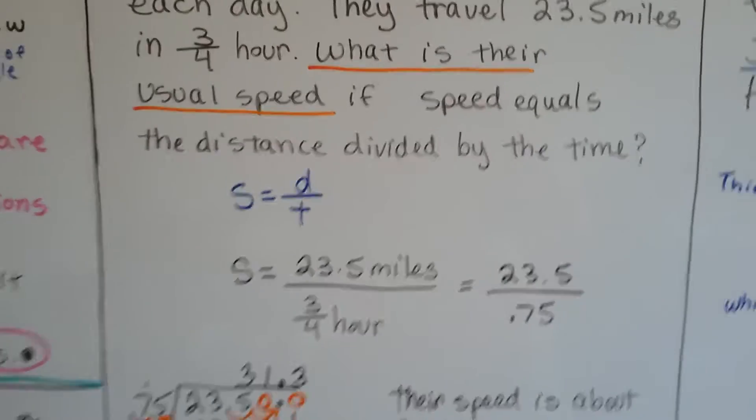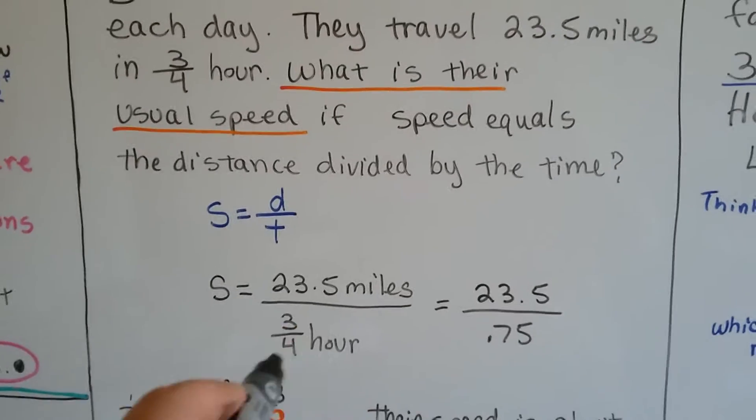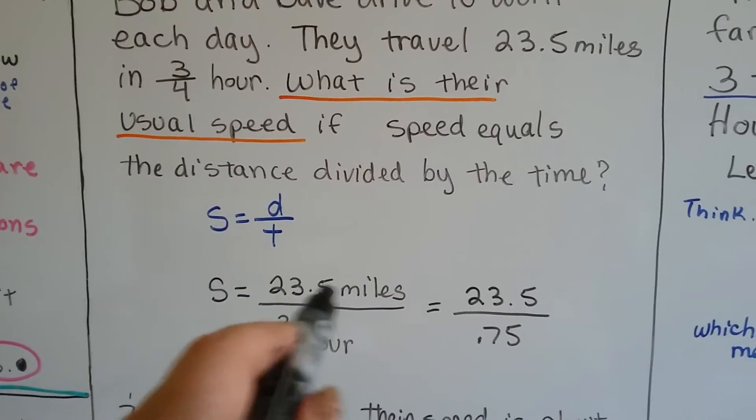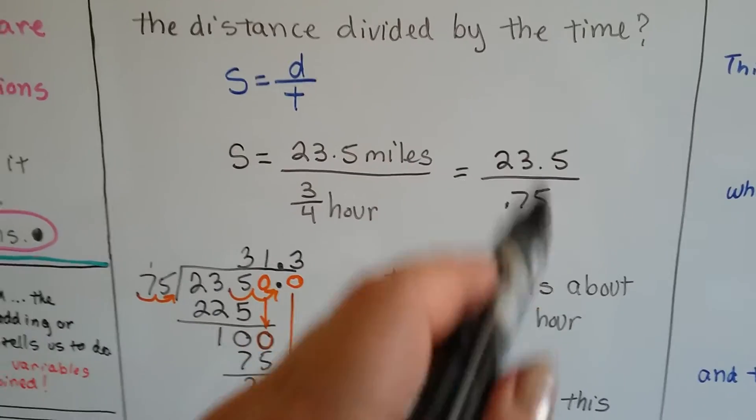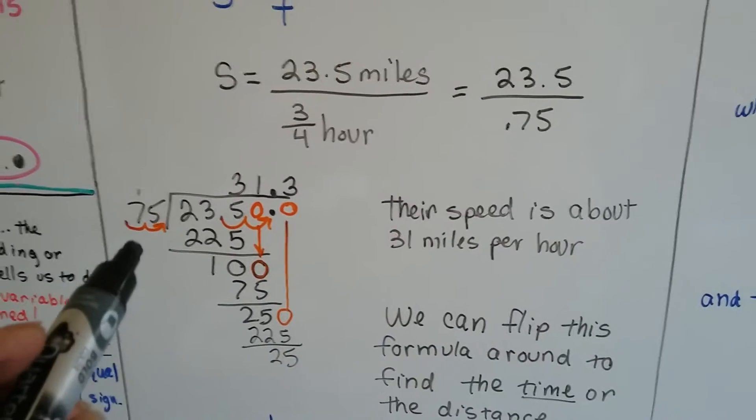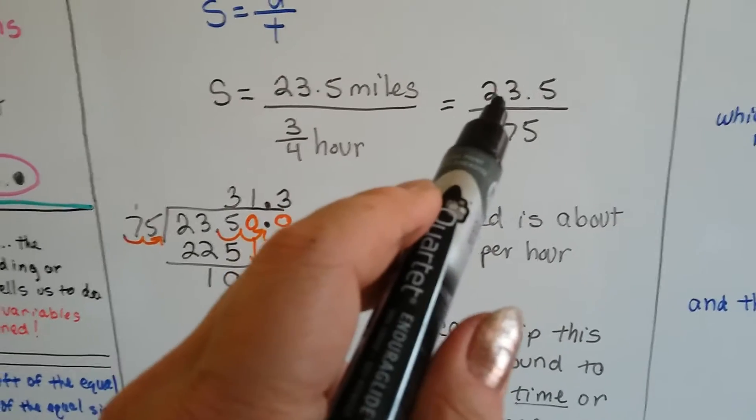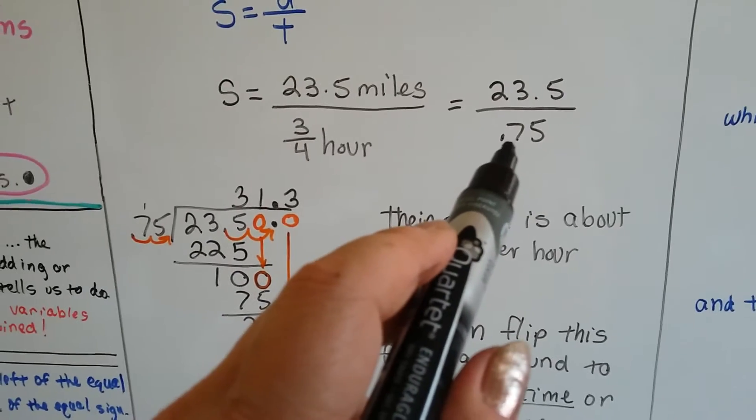We had to change the 3 fourths hour into a 0.75 so that it got along with the 23.5 miles. That way they're both decimals and we can do our math.